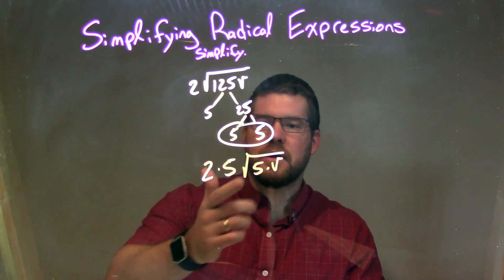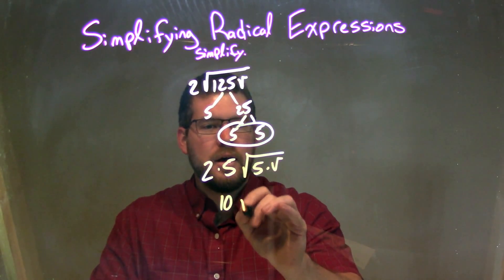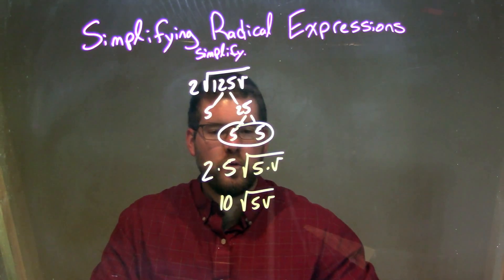So now let's simplify this. 2 times 5 is 10, pretty simple. Then 5 times V is going to be written as 5V.